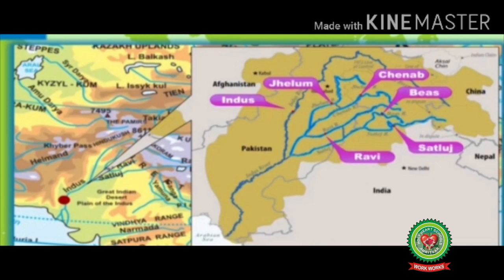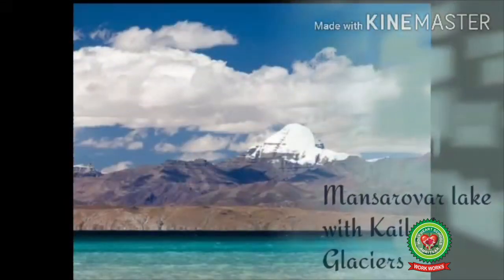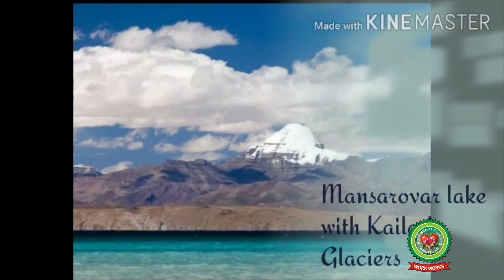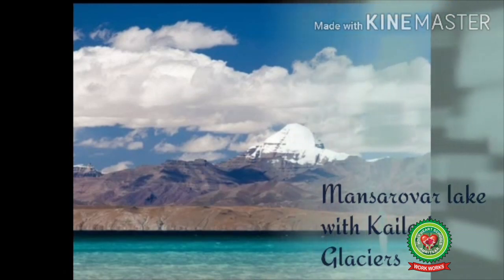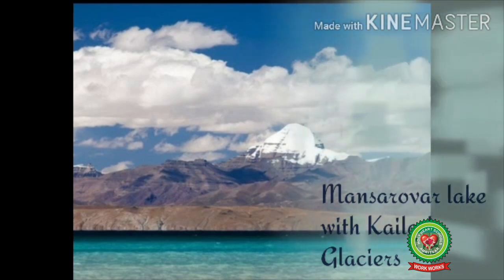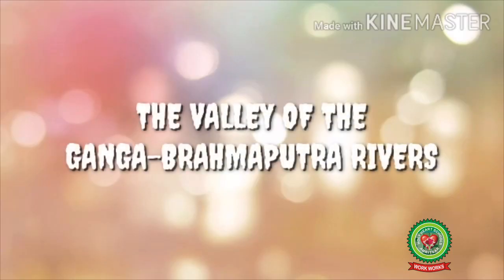The Indus acts as a backbone of agriculture and food production in both countries. Manasarovar Lake is a high-altitude freshwater lake fed by the Kailash glaciers near Mount Kailash in Tibet. It is a place of pilgrimage, attracting religious people from India, Nepal, Tibet, and neighboring countries.